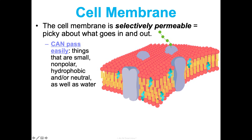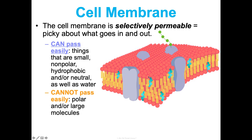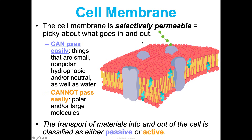Water can also make its way through. Water is polar, but it's really tiny, so it's able to pass through the cell membrane easily in small amounts. In large amounts, it needs help. What cannot pass easily are polar and large molecules — they need help getting through the cell membrane.